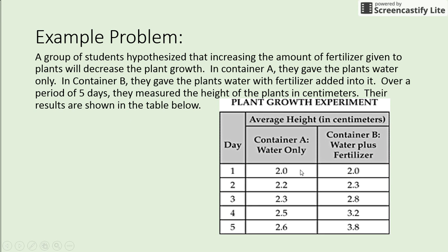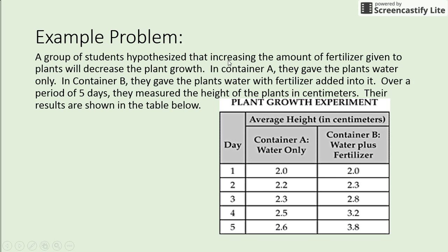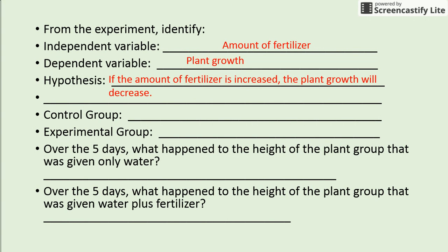Before we write our conclusion, let's break down the parts of the experiment. The independent variable is what we're changing — looking at the experiment, the thing we are changing is the amount of fertilizer given to plants. The dependent variable is what we are measuring — in this case, the plant growth, or the height in centimeters, if we want to be more specific.